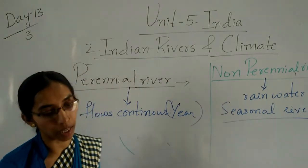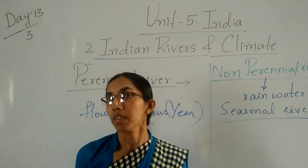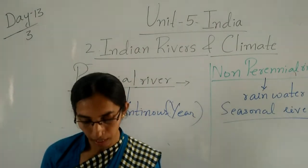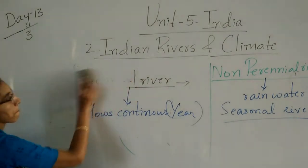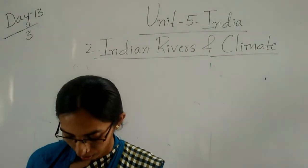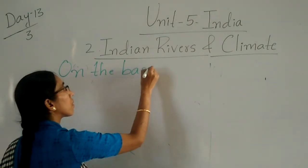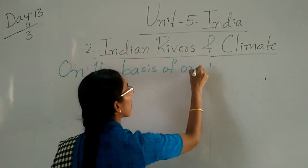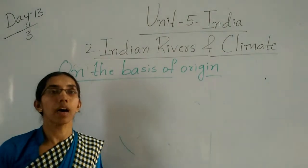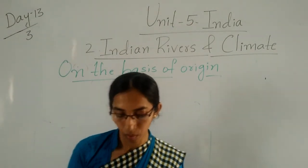Rivers can be classified on the basis of their origin — that is, where the river's birthplace or starting point is. On the basis of origin, rivers are divided into two types: Himalayan rivers and Peninsular rivers.